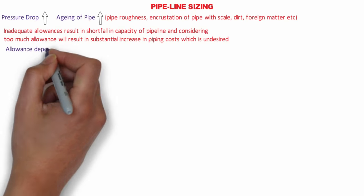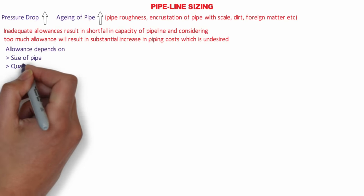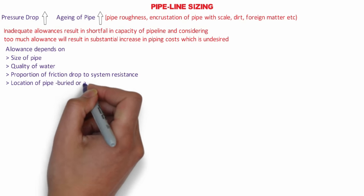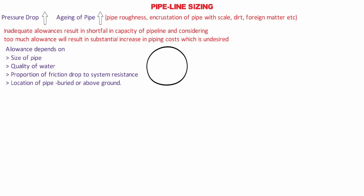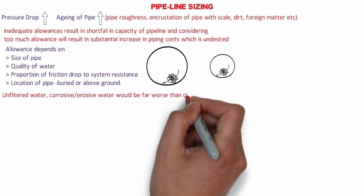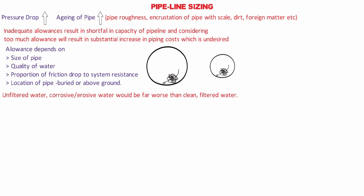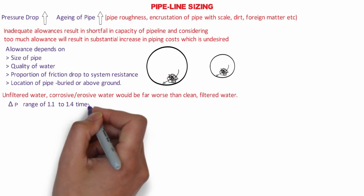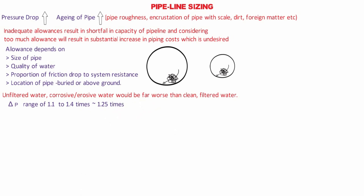The allowance to be provided depends on the following factors: size of pipe, quality of water, proportion of friction drop to system resistance, and location of pipe — buried or above ground. Larger pipelines are affected to a lesser extent than smaller ones since friction factor depends on relative roughness and not absolute roughness. Unfiltered, corrosive, or erosive water would be far worse than clean filtered water. Normally, an increase in pressure drop is provided in the range of 1.1 to 1.4 times based on actual conditions, but an average of 1.25 times may be considered for average pipe sizes as encountered in process and power plants with reasonably clean water.